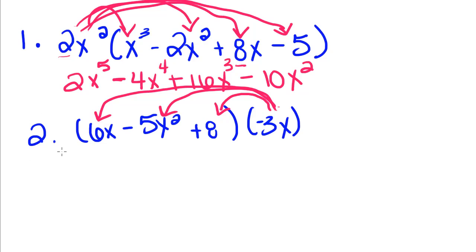Just because we always do our math right to left, I'm going to start with this 6x. You can start with the 8, that's fine. You just have to make sure that each sign goes with the correct thing. Negative 3x times 6x is going to give us a negative 18x squared, because 1 plus 1 is 2.